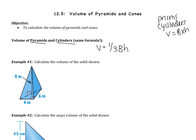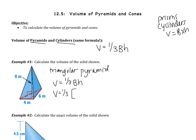Let's jump into example number one: calculate the volume of the solid shown. This one is a triangular pyramid — it has one base and that base is a triangle, this triangle right here. Because this is a pyramid, my volume is going to be one-third area of the base multiplied by the height. My base is a triangle, so it's going to be one-half base times height. Four is the base of the triangle, six is the height of the triangle, and then the height of the entire pyramid is nine.